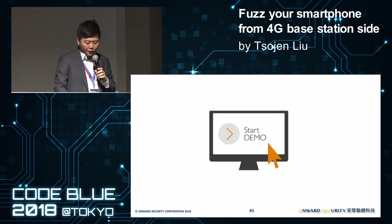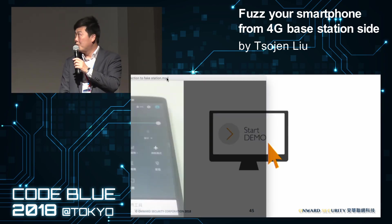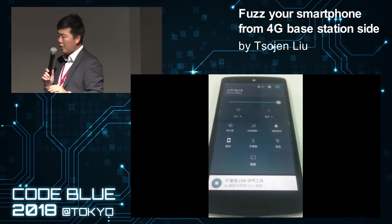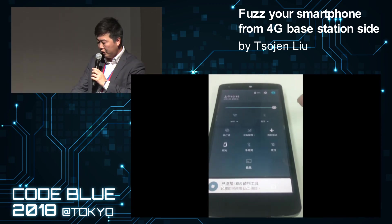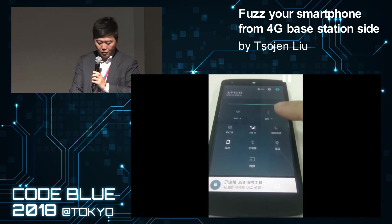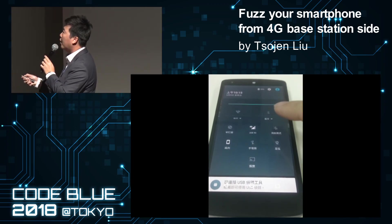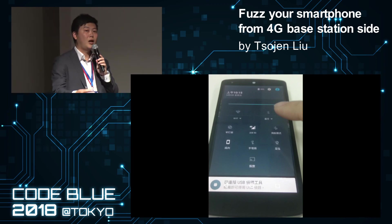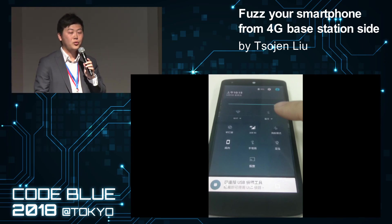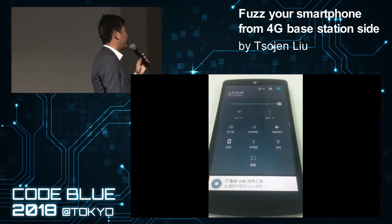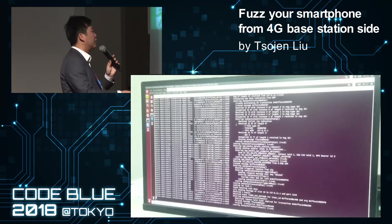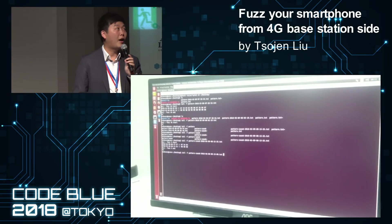We prepared a video demo because doing a live demo with real equipment is very difficult here. The demo has three parts. In part one, we turn airplane mode on and then off, and you can see the phone connecting to our base station with carrier ID 20893 — confirming our base station is working and the smartphone can connect to it. Then we switch back to airplane mode.